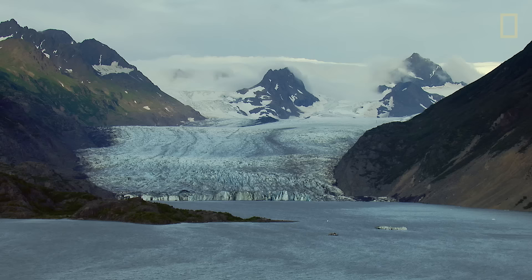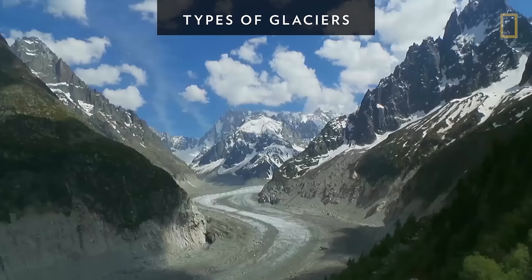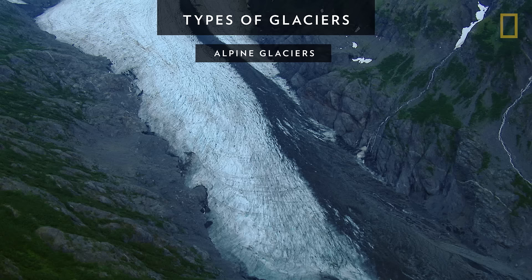A glacier is a huge mass of ice that moves slowly over land. Glaciers can be classified into two general groups: alpine glaciers and ice sheets. Alpine glaciers form on mountainsides and move downwards through valleys. Sometimes they create valleys by pushing dirt, soil, and other materials out of their way.